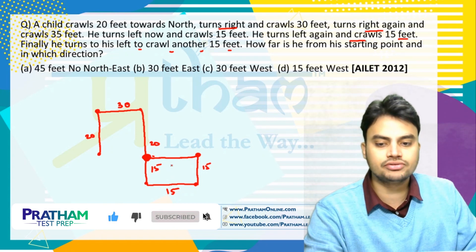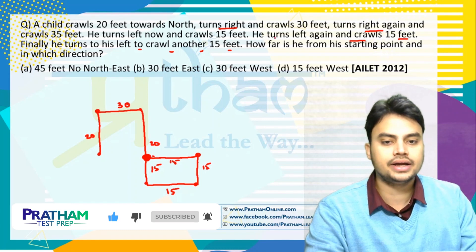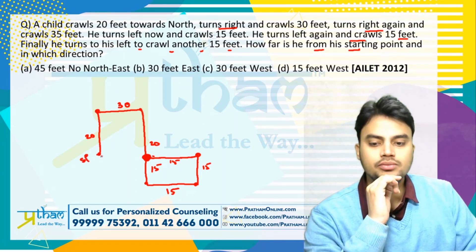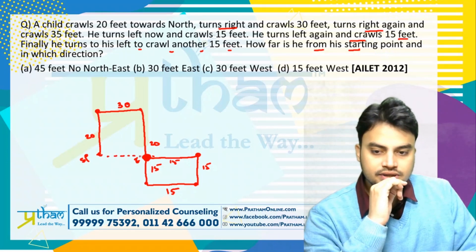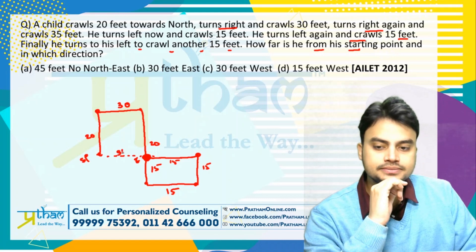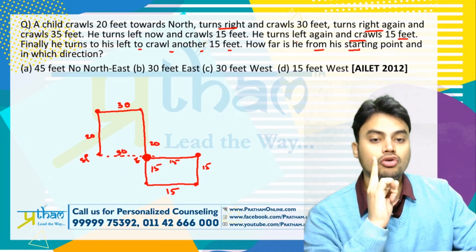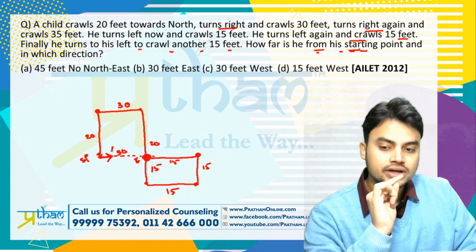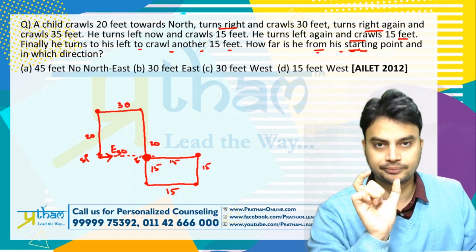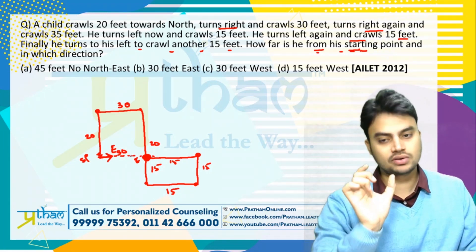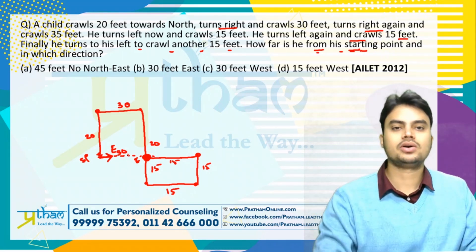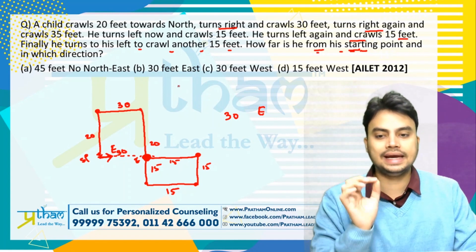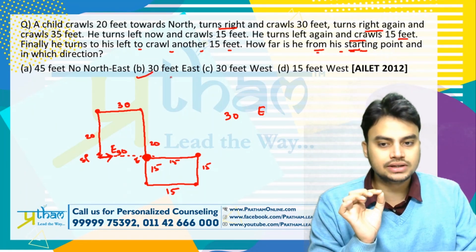We have to ask: how far is he from his starting point and in which direction? This was his starting point and this is his ending point. The distance between them will be 30. How far is he from his starting point and in which direction? The direction will be east — everything we have seen in previous videos. The distance is 30 feet and direction is east, so the ending point is 30 feet towards east. The answer will be B. This question was asked in ELEC 2012.